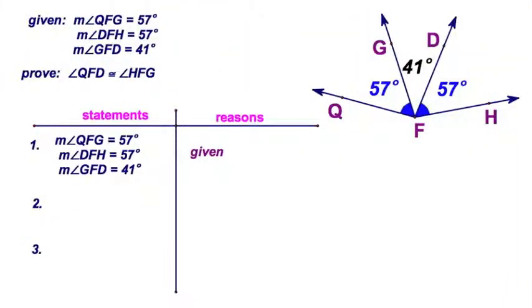All right, this is our first formal proof, so we're going to take our time on this one. Every proof that we're going to do will have a diagram, and we have a list of given statements—those are facts that we know at the start.